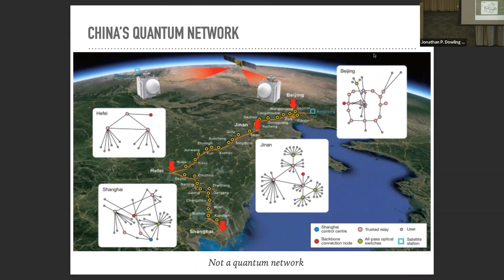They've actually got an entire what they call a quantum backbone, connecting many cities in China and within various cities, some local area networks. Lots of people see these pictures and the language around it and come to the conclusion that this is a quantum internet, which it isn't. It's actually what they call a trusted node quantum key distribution network.